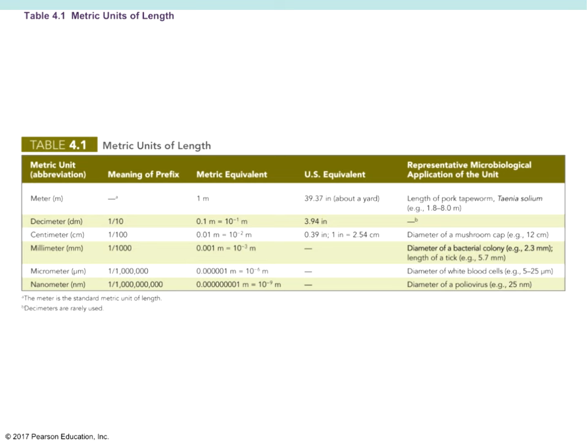One meter is about the length of a tapeworm. If we go to a tenth of a meter, we don't have a strong microbiological application there, but a decimeter is a tenth of that. A centimeter — each one of the hash marks on a meter stick — there are 100 centimeters in one meter. The size of that would be like the diameter of a mushroom cap, about 12 centimeters.